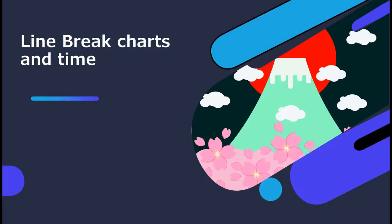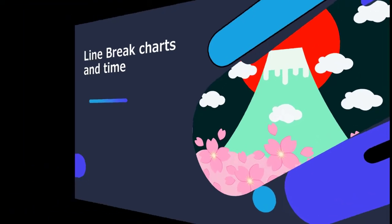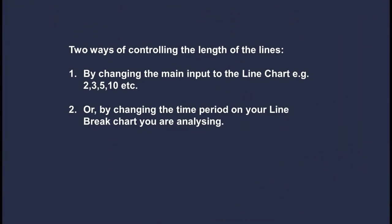As mentioned previously, the line break chart like other Japanese chart types doesn't focus on time — it focuses on price movement. So let's look at how that impacts our line break charts. There are two ways of controlling the length of these lines: first, by changing the main input to the line chart — for example a three, two, five, or ten line break chart, which can speed up or slow down the trend.